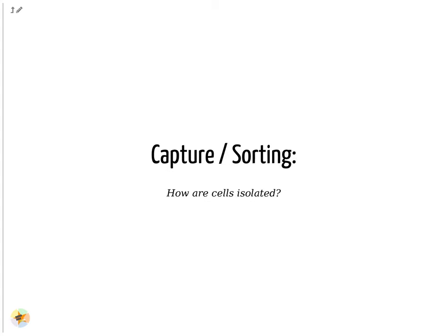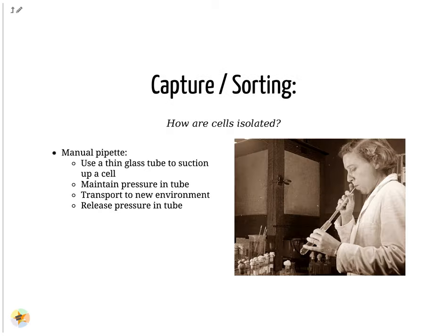Cell isolation can be performed in different ways. One method is manual pipetting, where wet lab scientists suction up individual cells using a long thin tube. They can do this hundreds of times to isolate hundreds of cells, but it is error-prone, and often multiple cells are isolated together.